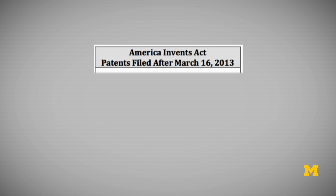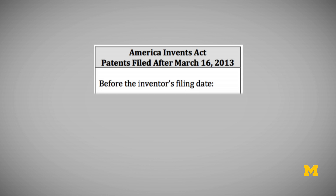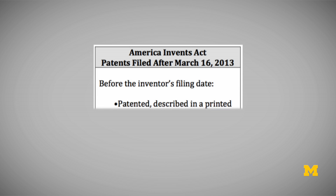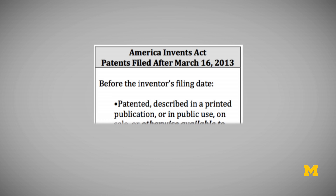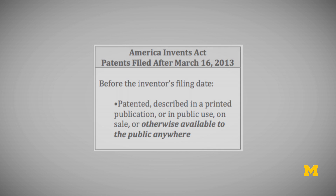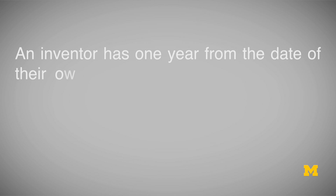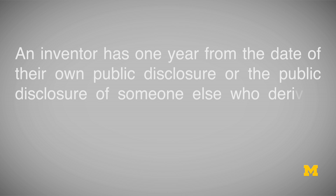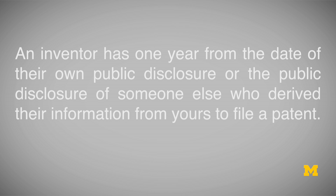This makes things a little simpler. It simply says that prior art includes information created before the inventor's filing date that causes the information to be patented, described in a printed publication, or in public use, on sale, or otherwise available to the public anywhere. So basically, as long as your technology is publicly available anywhere in the world before your filing date, you will not be able to get a patent. In the new law, there is one limited one-year grace period that gives an inventor one year from the date of their own public disclosure, or the public disclosure of someone else who derived their information from yours, to file a patent.